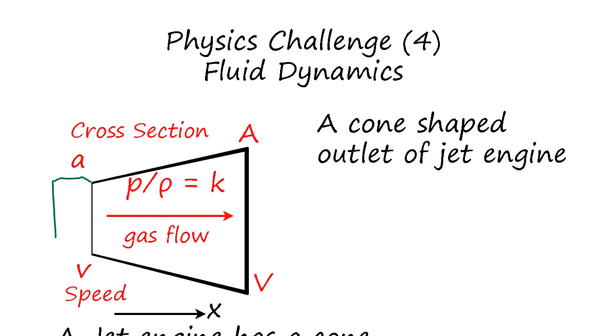So here's the jet engine. And the gas flow, the cross-section is a here and capital A here. So it's opening up wider. So the speed slows down V, this speed is faster v. So taking X coordinate like that.